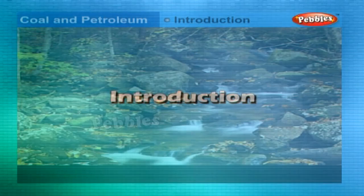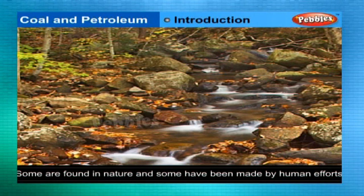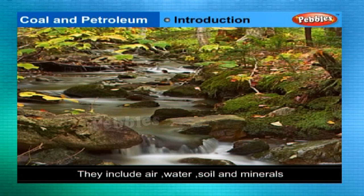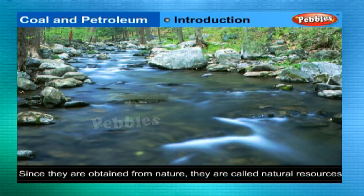Introduction: We use various materials for our basic needs. Some of them are found in nature and some have been made by human efforts. This list includes air, water, soil and minerals. Since all these are obtained from nature, they are called natural resources.